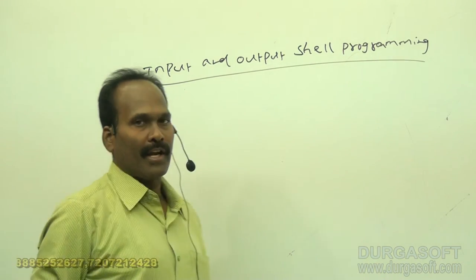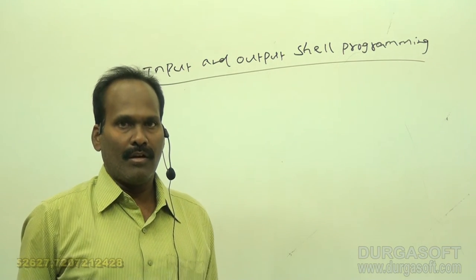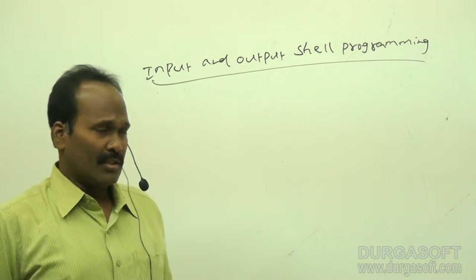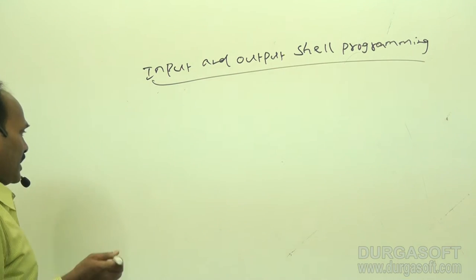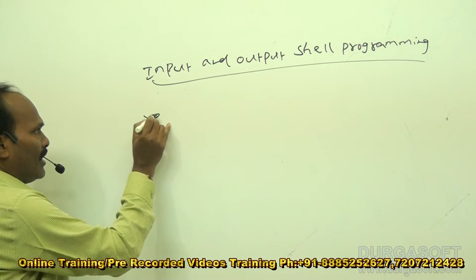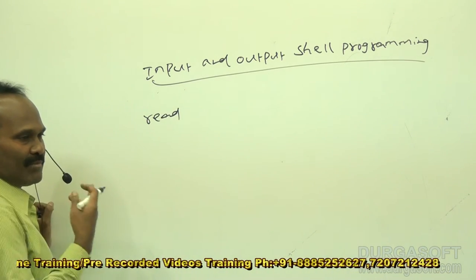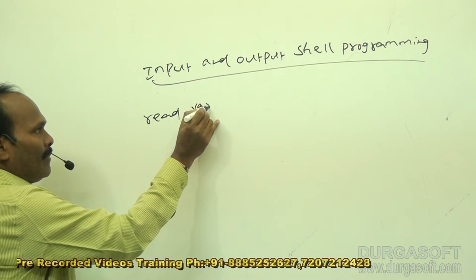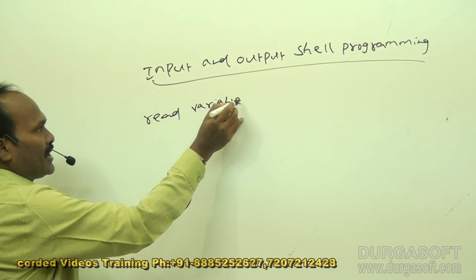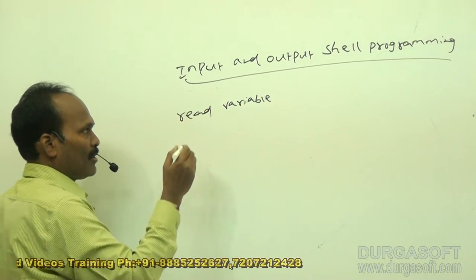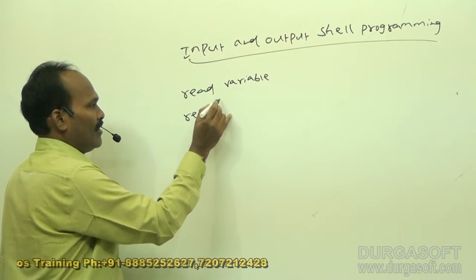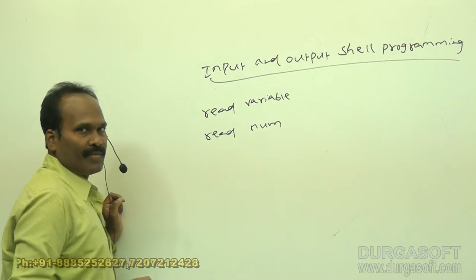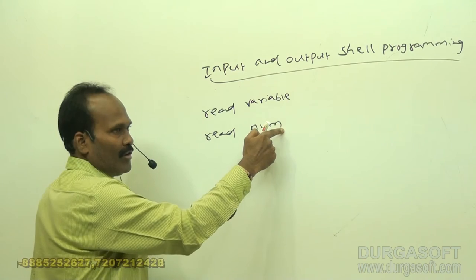Every shell program requires some input from the user and output as well. To take input from the keyboard in Linux, we use the read command, which is similar to scanf in C and C++. The syntax is: read followed by the variable name. For example, read num — the number given by the user will be stored in the variable num.